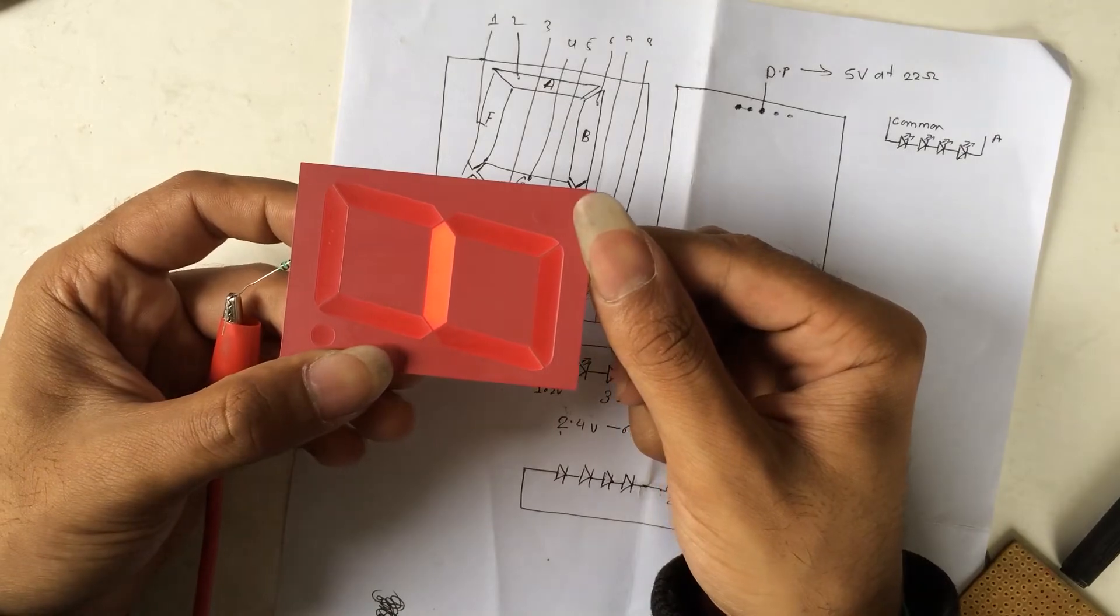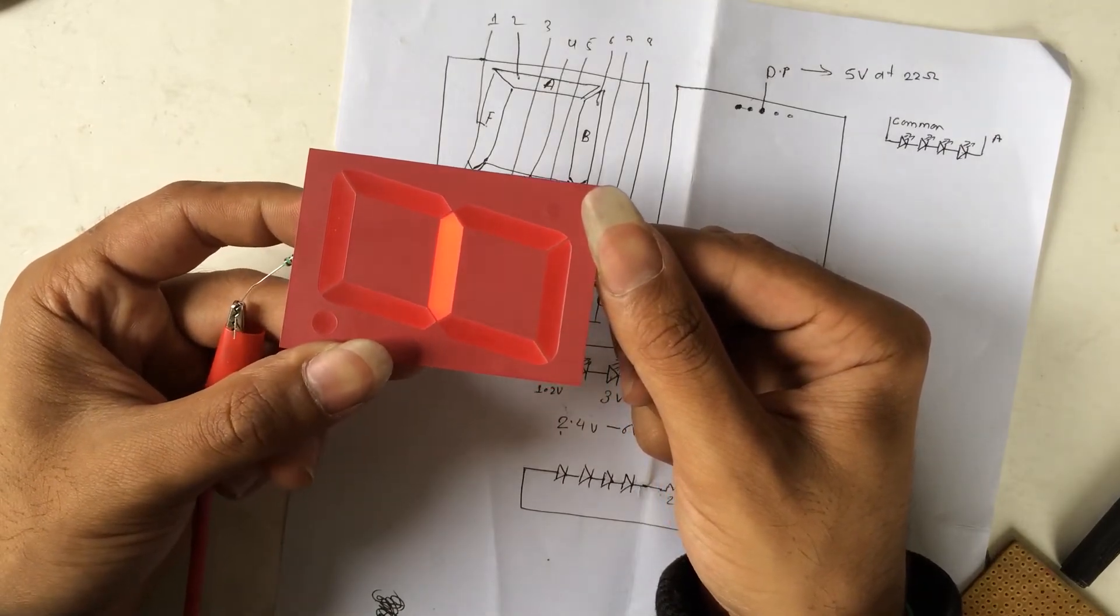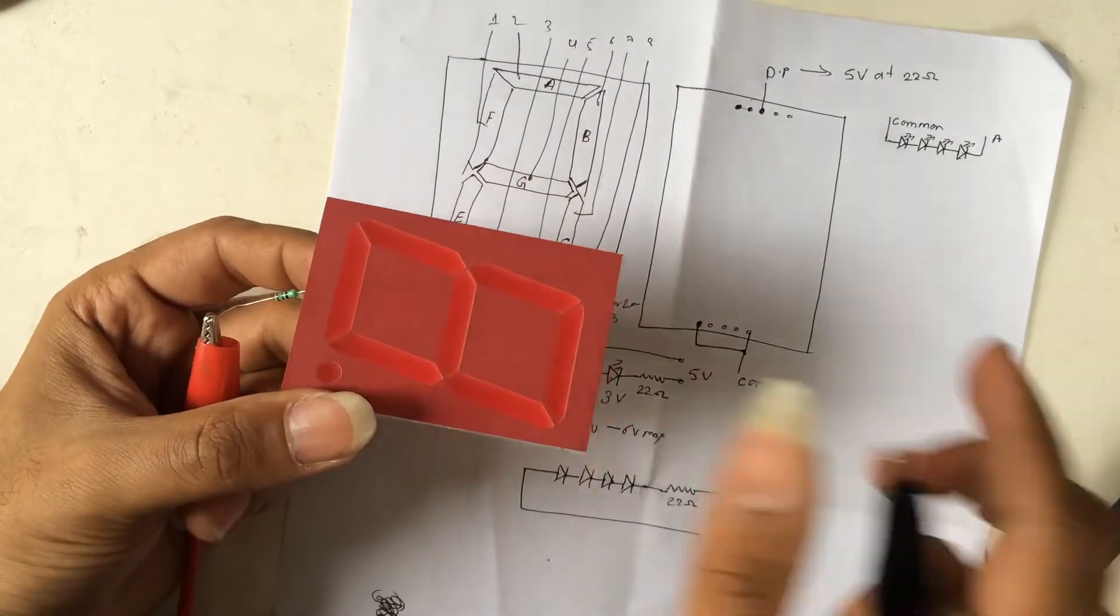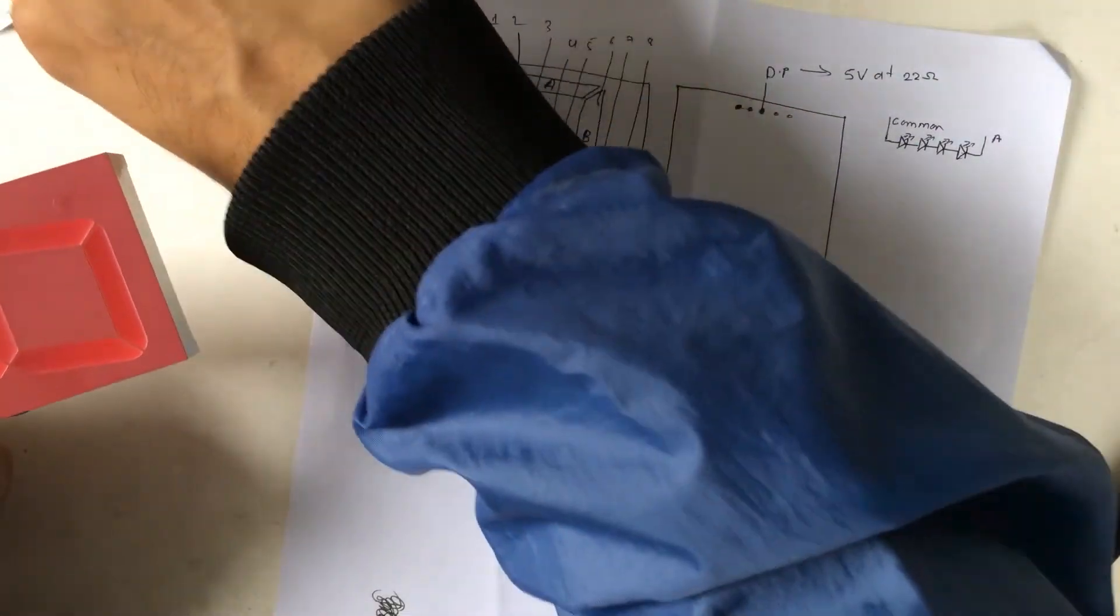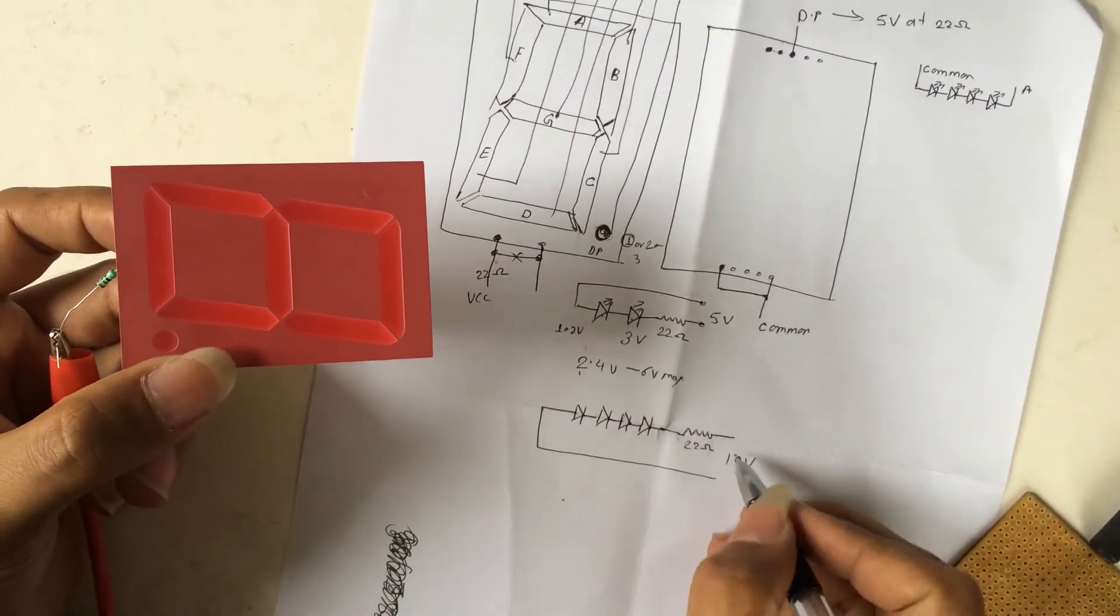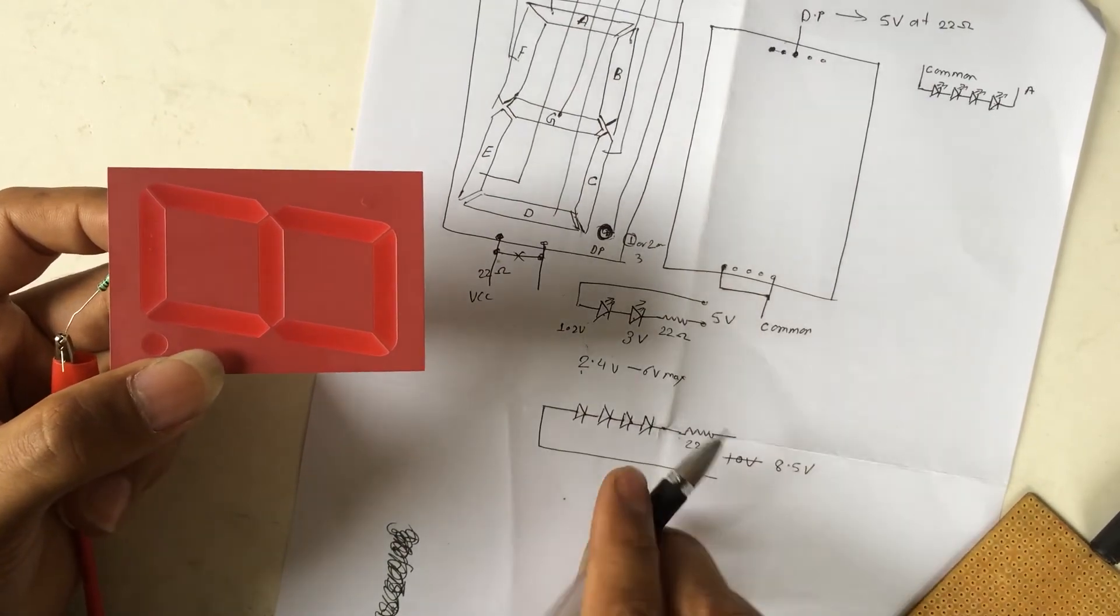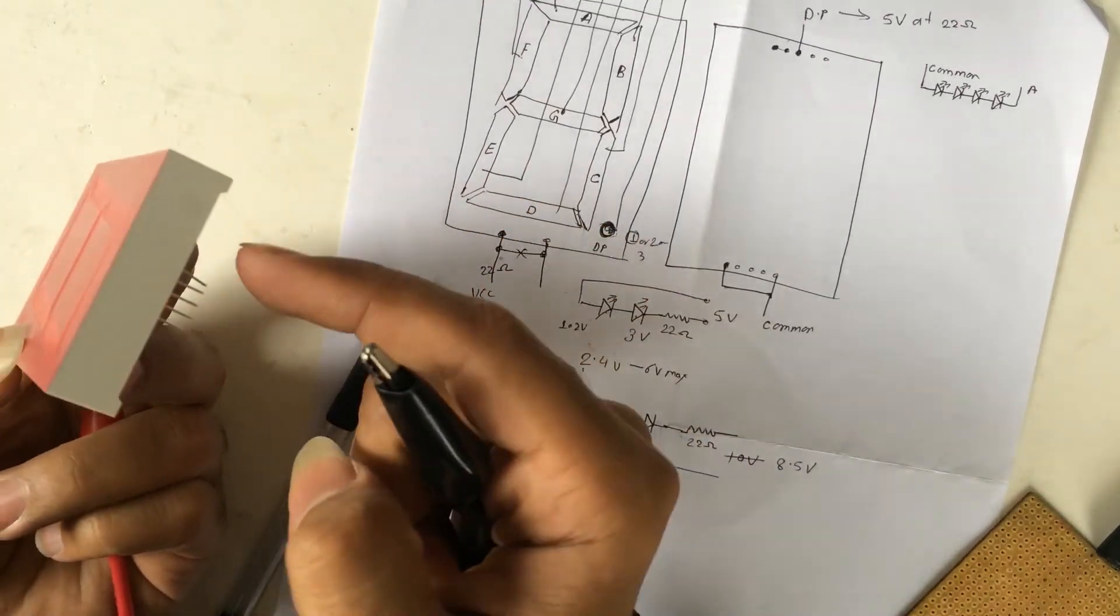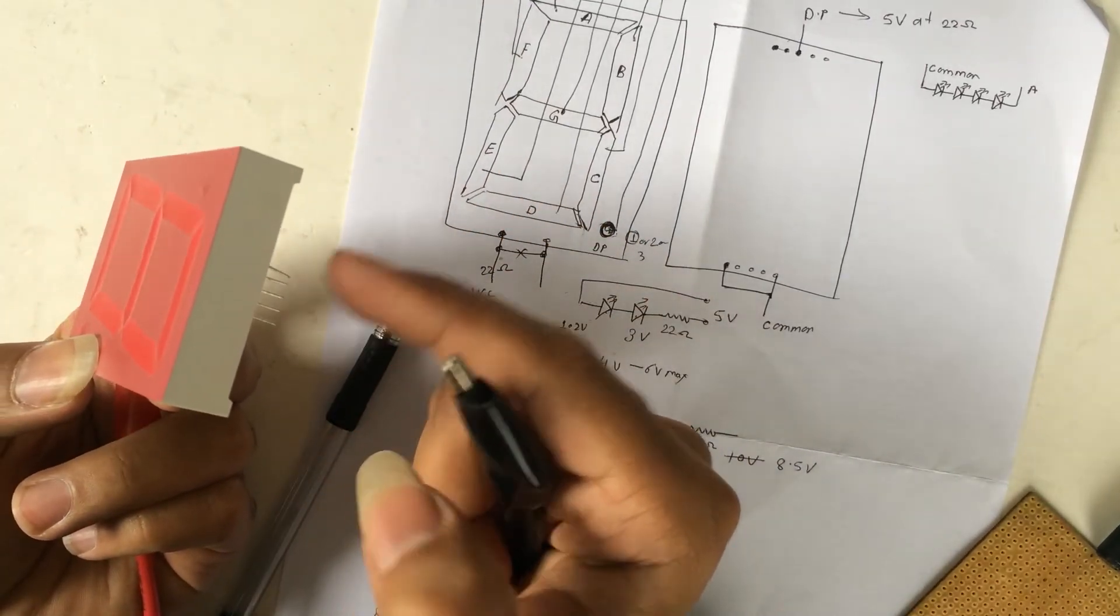And this is the maximum brightness at 8.5 volt with 22 ohms resistor in series. So I will go with 8.5 volt. And since we have already known these two leads, the first pin is G.